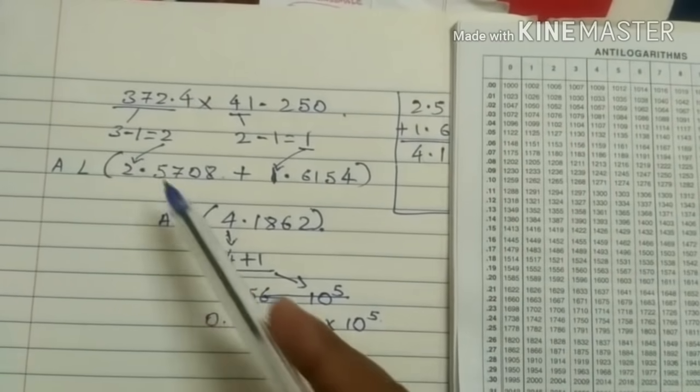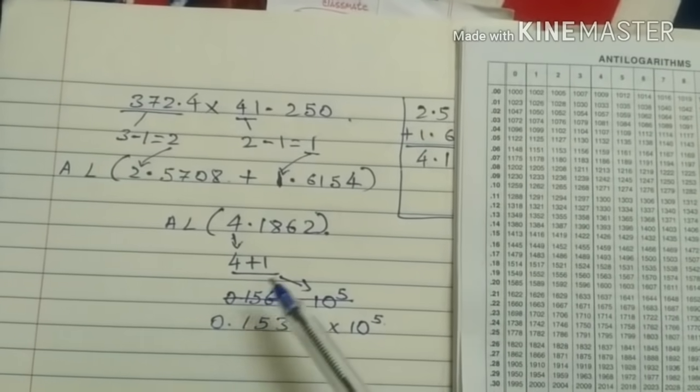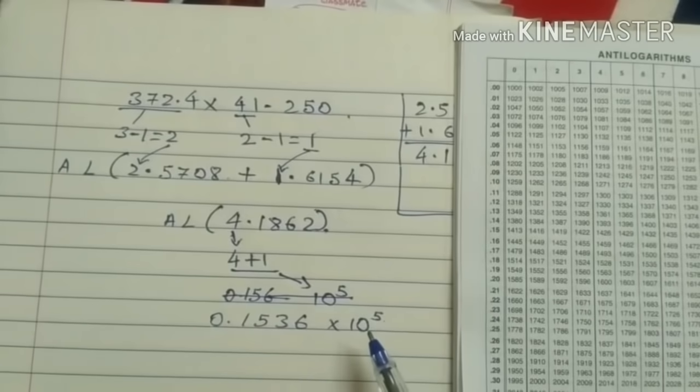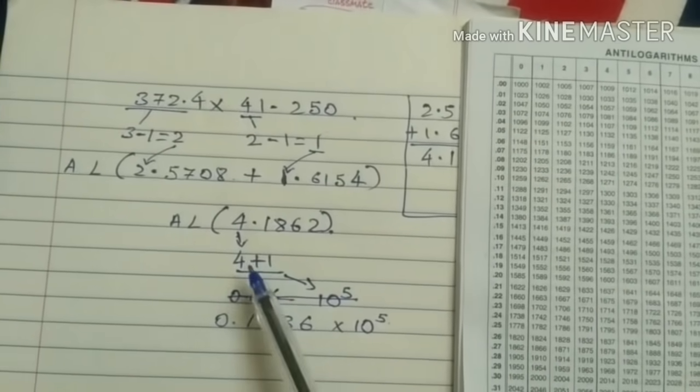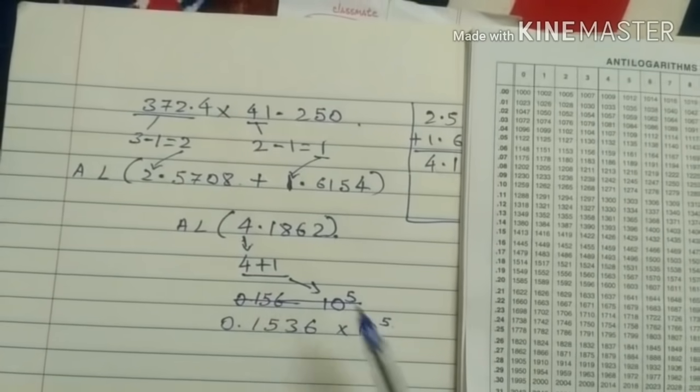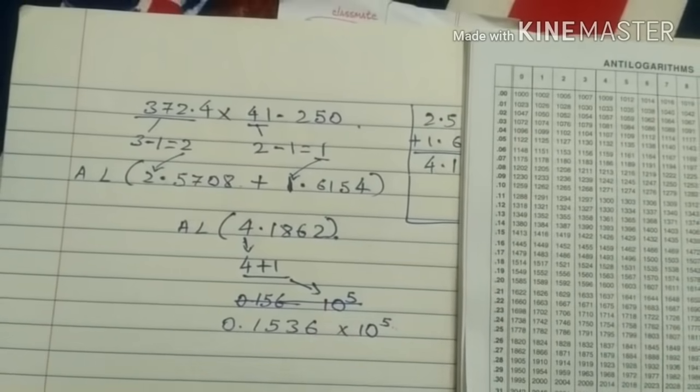While finding the log. We had just subtracted. Now we after the finding antilog. At the ending of the sum. Just we have to add 1 more. So here it is 1. It is 4 plus 1. 5. So 10 raised to 5. Now this is your sum. So if we will see. The answer will become.